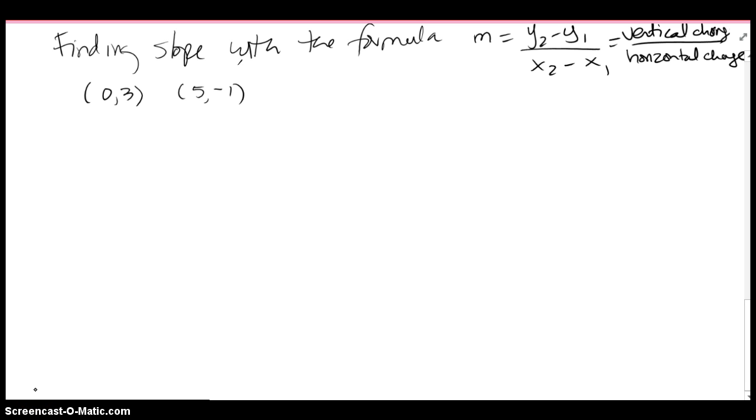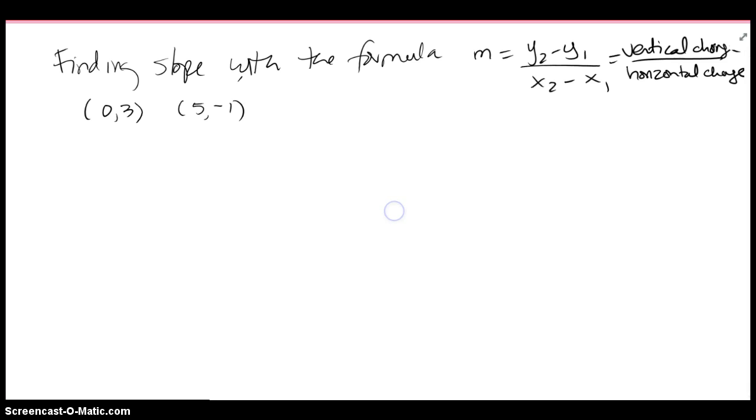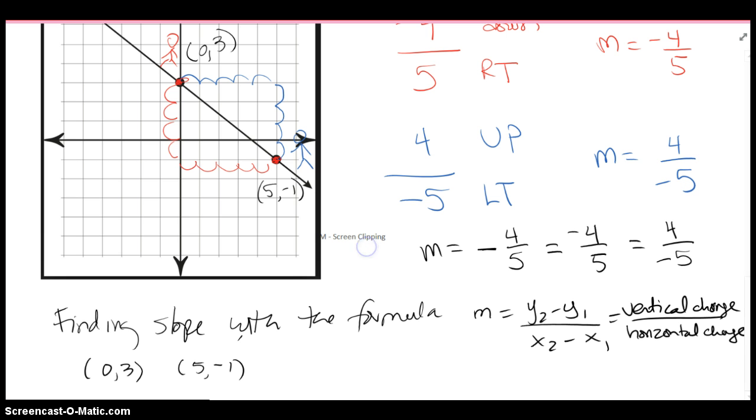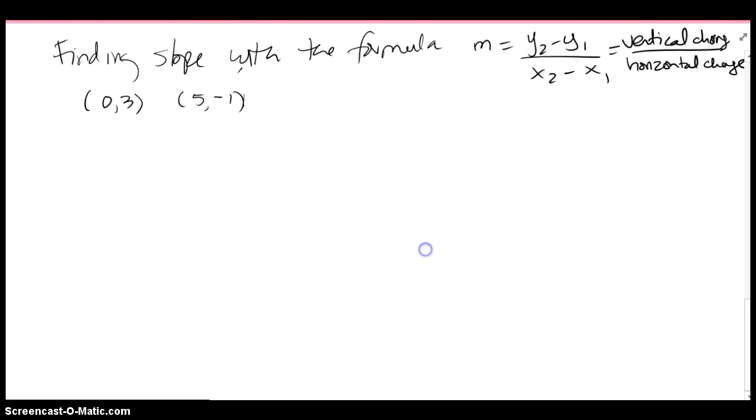Next we're going to look at finding the slope with the formula that you might remember, y2 minus y1 over x2 minus x1, which is really just the vertical change over the horizontal change of the line. If I go back up to what we did earlier, I'm just pulling out those ordered pairs (0, 3) and (5, -1) from the graph. This time, without looking at the graph, we're going to find them using the formula.